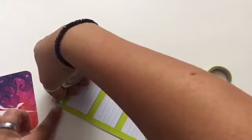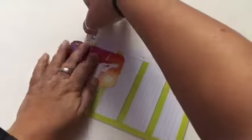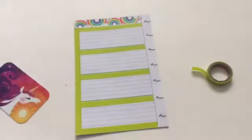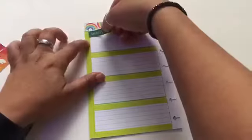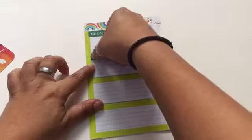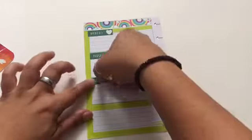For the top part of the page, I'm going to use this rainbow washi tape. I thought it was a perfect touch to add since there's always a pot of gold at the end of the rainbow. Then for the days of the week, I wanted to use a dark green so it would stand out amongst all the different greens that this spread will have.